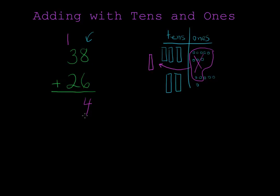Now when we count our tens, we see that there are 6 tens altogether. 1 plus 3 plus 2 more makes 6. So the answer is 64.